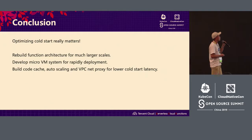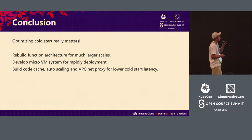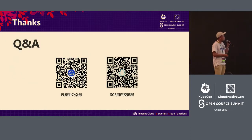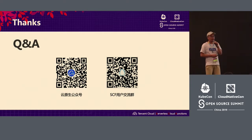In conclusion, cold start is really important because we rebuilt the function architecture for much larger scales. We deploy a MicroVM system for rapid deployment, build code cache and autoscaling, and use a VPC net proxy for lower cold start latency. We have QR codes here — if you have any questions, you can scan the QR code and join our WeChat group or follow our official WeChat account.